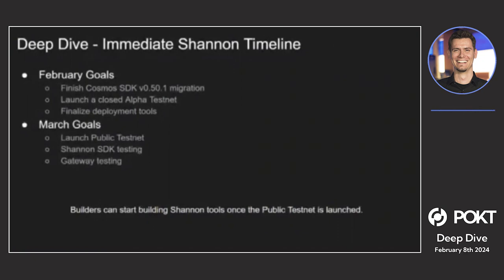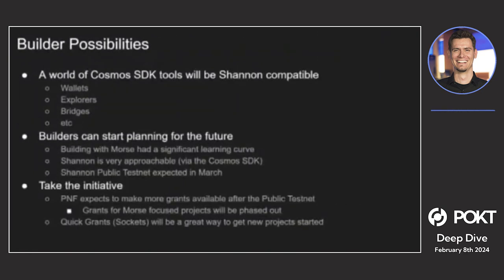In terms of timeline: the February goals are to finish the migration to the latest Cosmos SDK and then launch a closed alpha testnet — mainly to confirm that validation is properly happening — and finalize deployment tools. March is where things start to open up for builders with the launch of a public testnet. The protocol team will focus on Shannon SDK testing and gateway testing, and builders can start using Shannon tools once the testnet is launched.